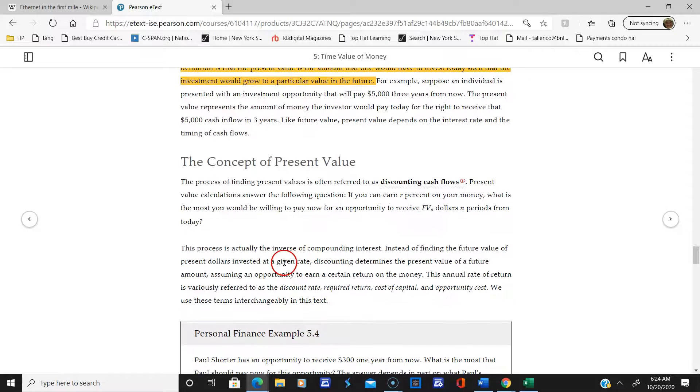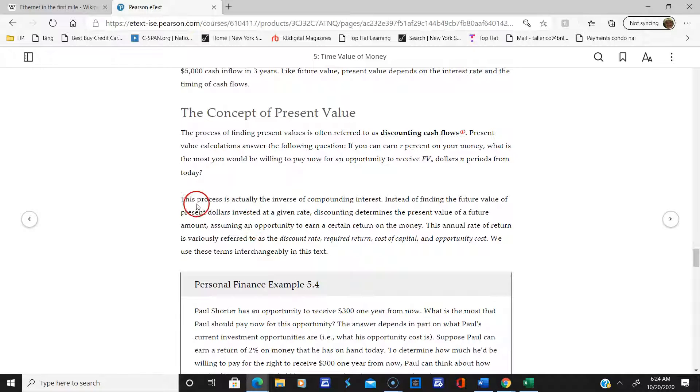We use this term called discounting cash flows - this is the process of finding present values. It's the inverse of compound interest. You have compounding for future and discounting for present. Discounting determines the present value of a future amount.